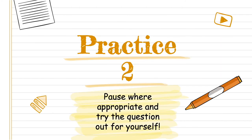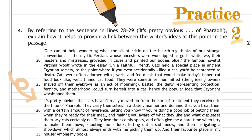We're going to do another practice paper — practice two. You have an opportunity to pause and work more independently. If you're still not feeling confident enough to answer linking questions by yourself, that's absolutely okay — we'll work through it together. Practice two asks: 'by referring to the sentence in lines 28 to 29, explain how it provides a link between the writer's ideas at this point of the passage.' Following the steps, I need to highlight lines 28 to 29 in the passage, and I usually recommend reading the paragraph prior to gauge when there's a change in subject.